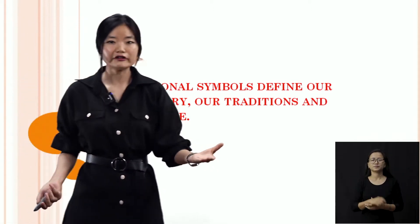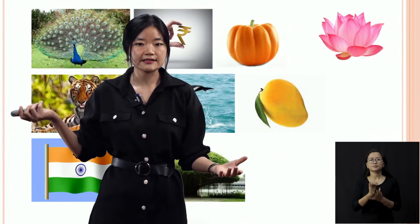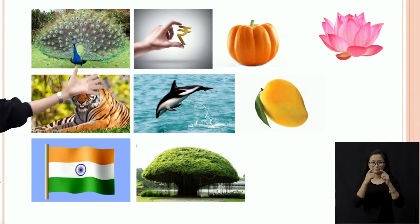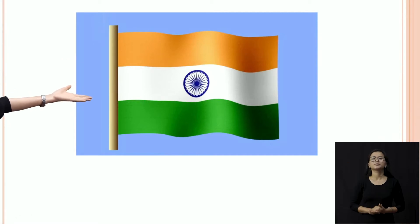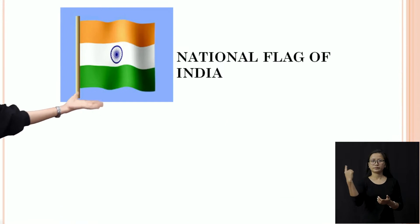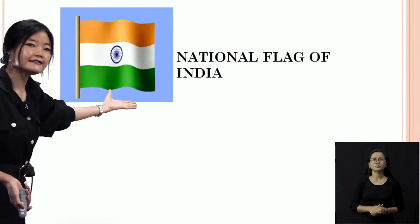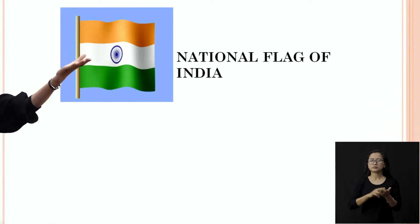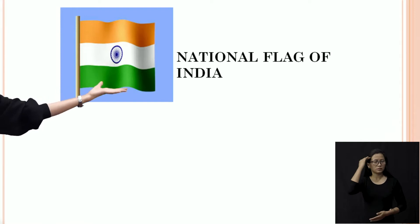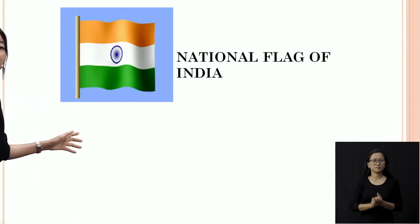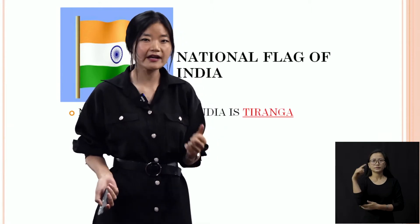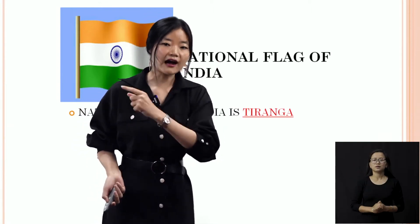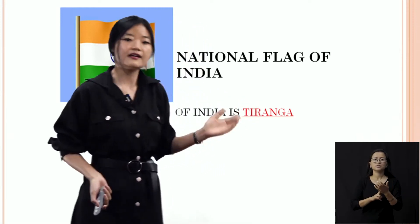So the first national symbol we're going to learn about is the national flag of India. This is the national flag of India — very important. So let's try to know about the national flag of India more deeply. The national flag of India is called Tiranga. The spelling is T-I-R-A-N-G-A, Tiranga.